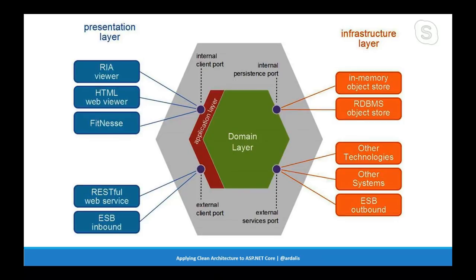Clean architecture — which goes by other names like onion architecture, hexagonal architecture, or ports and adapters — is shown in this diagram. In the middle you've got your business rules, the domain layer. You might also have a small application layer around that with rules for how your application specifically works. It exposes ports that other things can implement from outside that core layer. In .NET, a port is something you can implement — generally an interface. The internal persistence port might be a repository or other interface for storing and retrieving data. In your infrastructure layer you might have a SQL Server or in-memory implementation, and you can swap those in and out easily because they both implement that same port.